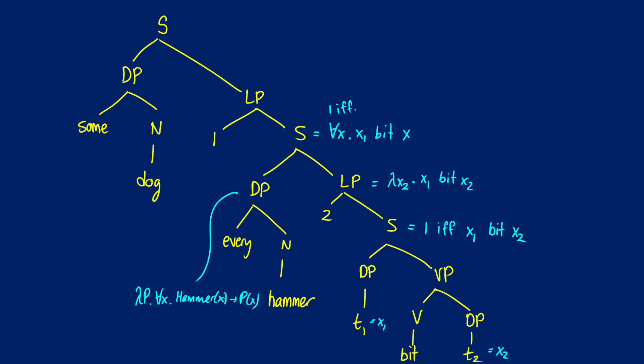Now we have a true statement, but we need to abstract over the X1 as well, because X1 is going to be some dog. At the LP now, we can do our lambda X1 abstraction for X1 bit X.